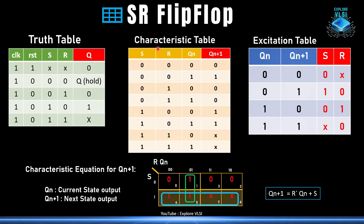Writing the SR flip-flop characteristic table with inputs S, R, and current state Q(n): when S=0, R=0, Q(n)=0 → Q(n+1)=0 (hold). When S=0, R=0, Q(n)=1 → Q(n+1)=1 (hold). For S=0, R=1, irrespective of current state, next state is 0. For S=1, R=0, irrespective of current state, next state is 1. When both S=1, R=1, irrespective of current state, the next state is indeterminate (X).